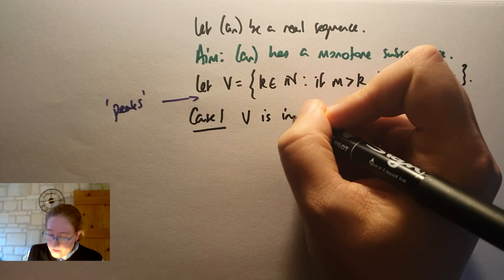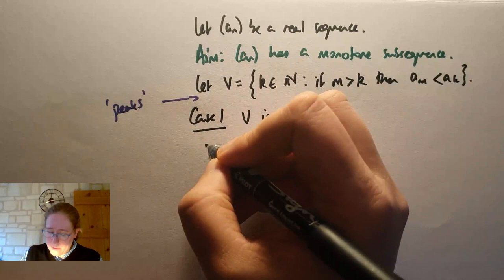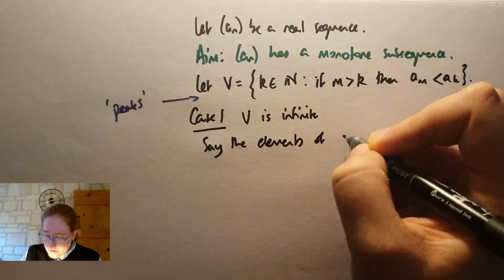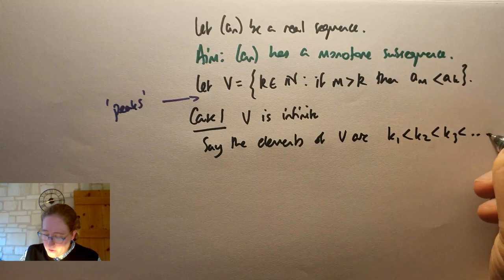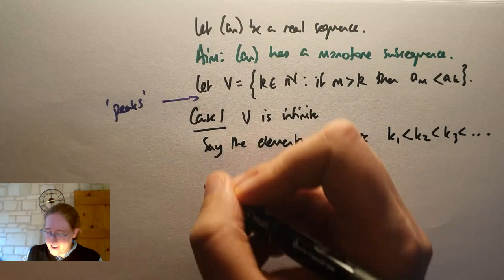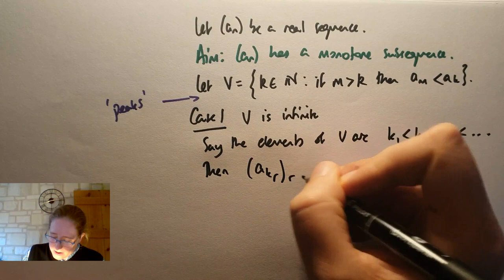So there are going to be two cases. Case one is where there are infinitely many of these. So what happens then? Well, let's say the elements of V are k_1 less than k_2 less than k_3 and so on, forever. So I'm just listing the elements of this set in order, because I want to pick out the subsequence.